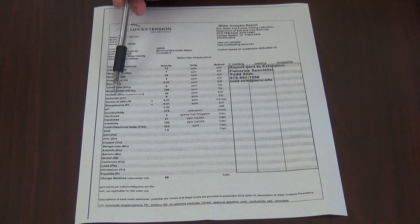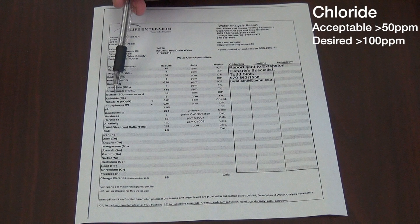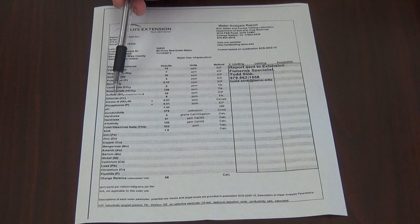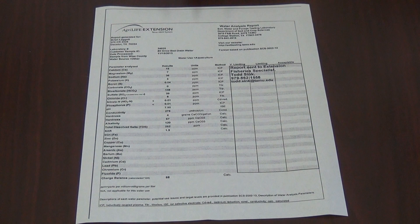Chloride can also be too low in a pond. Preferably, we would like to see chloride concentrations above 50 parts per million, and 100 parts per million is best. The reason for this is that chlorides play an important role in the prevention of brown blood disease, which can occur in the winter. A common amendment we will suggest if your chloride levels are too low is to add common stock salts, which is non-iodized salt sold for livestock purposes. This addition can help to raise your chloride concentrations up to the desired level.